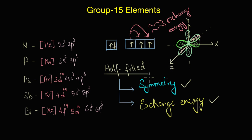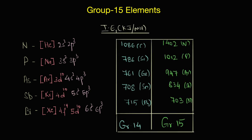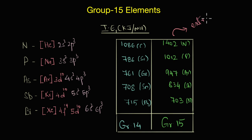This is why half-filled and fully filled configurations are extra stable. An important consequence of this extra stability is the increased ionization enthalpy of Group 15 elements — they have higher ionization enthalpy compared to Group 14 elements, due to the extra stability offered by the half-filled electronic configuration.